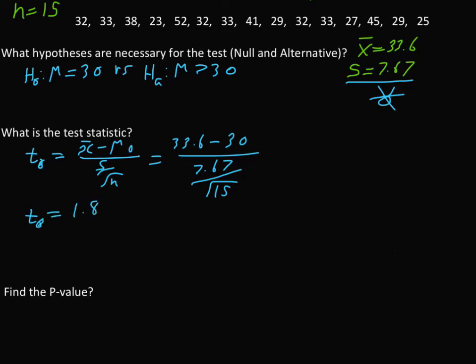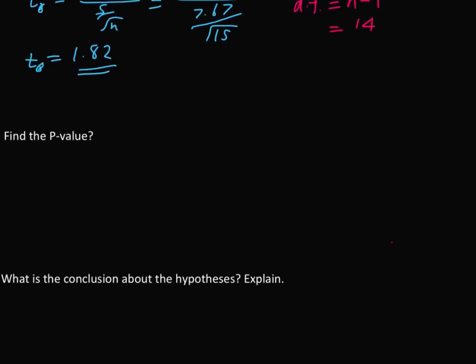That is the test statistic. Now they ask to find the p-value, so before we go to p-value, let me write down the degrees of freedom of the T. What is the degrees of freedom? N minus 1, which is 15 minus 1 equals 14.